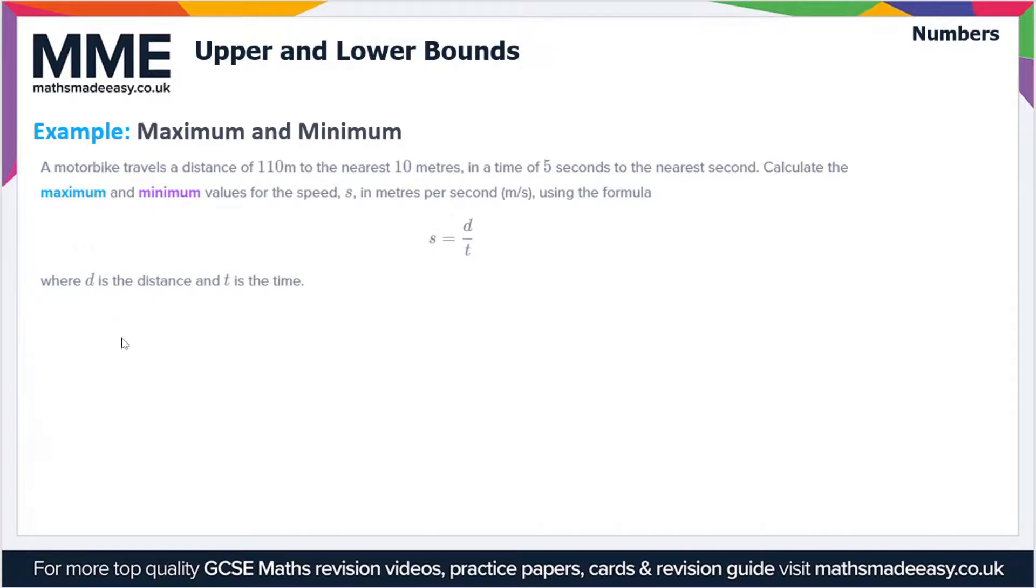Let's deal with the distance first. So distance of 110 meters to the nearest 10 meters. What can the values of the distance be? Well, if it's rounded to the nearest 10 meters, then the smallest it could be is 105 meters. If we include this value and round it to the nearest 10 meters, you will get 110 meters, so that's why we're using an inclusive inequality here. The distance falls within this range and a maximum value of 115, but it does not include 115 since that rounds to 120 to the nearest 10 meters.